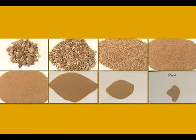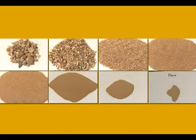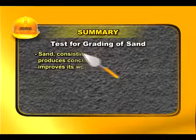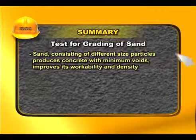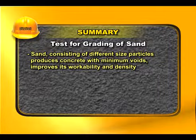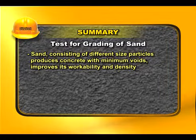In case of sand not having the required percentage passing through any particular sieve, sand from a different source can be mixed to make it qualify for the required gradation. Sand consisting of different size particles produces concrete with minimum voids, improving its workability and density.